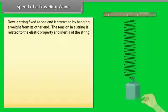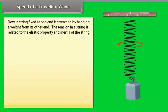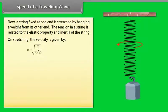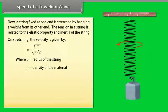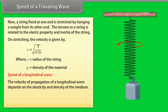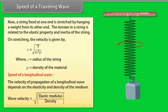The velocity with which a disturbance travels on a stretched string is given by c = √(T/μ), where T is the tension in the string and μ is the mass per unit length. For a string fixed at one end and stretched by hanging a weight, the velocity is given by c = √(T / (πr²ρ)), where r is the radius of the string and ρ is the density of the material. Speed of a longitudinal wave: The velocity of propagation of a longitudinal wave depends on the elasticity and density of the medium, given by wave velocity = √(elastic modulus / density).